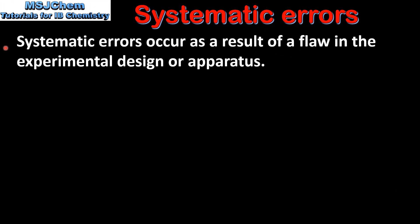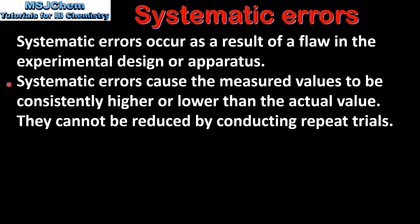Next we look at systematic errors. Systematic errors occur as a result of a flaw in the experimental design or apparatus. Systematic errors cause the measured value to be consistently higher or lower than the actual value. They cannot be reduced by conducting repeat trials.